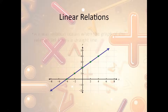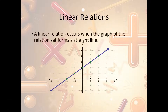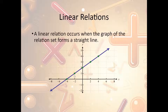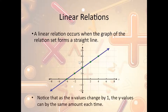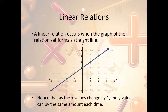Linear relations: a linear relation occurs when the graph of the relation forms a straight line. Looking at a table, as the x values change by 1, the y values change by the same amount each time — stepping up the same amount consistently. That consistent, equal change is what makes it linear.